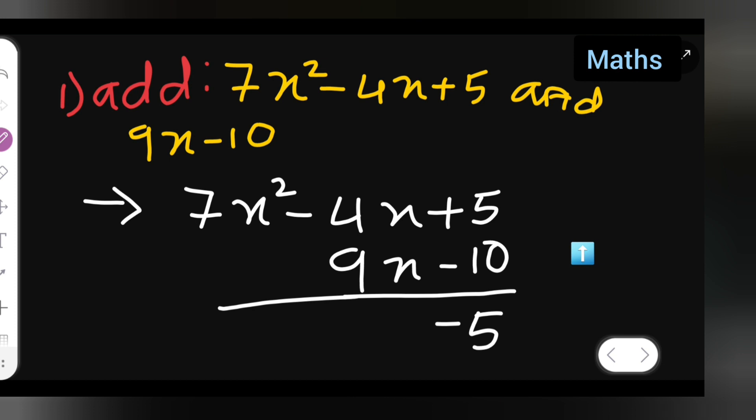Next, what I'll have to do is -4x plus 9x. So 9 minus 4 will be positive 5, which is 5x.